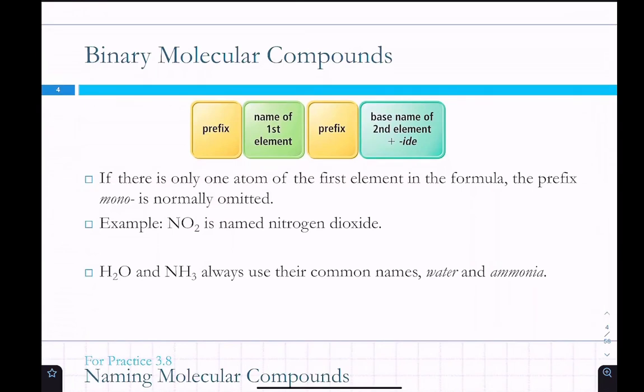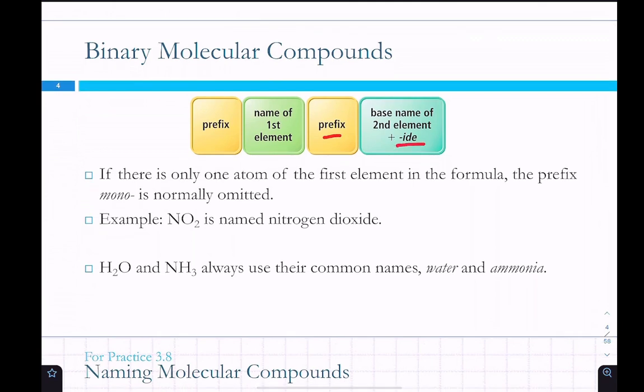We're going to be naming binary molecular compounds. We're going to be using a prefix and then the name of the first element. And then another prefix for the second element. And then for the second element, you change the ending to IDE, similar to what we were doing for ionic compounds. If the first element in the formula, if there's only one of them, then you usually drop mono.